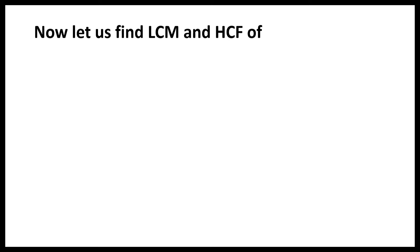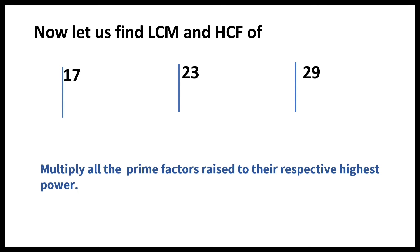Now, let us find the LCM and HCF of 17, 23 and 29. Here, you can observe all of these are prime numbers. So, to get LCM, we have to multiply all the prime factors raised to their respective highest degree. So, LCM is equal to 17 times 23 times 29 which is equal to 11,339.